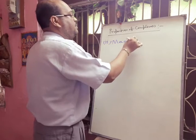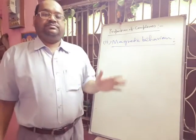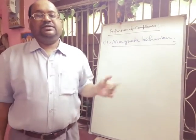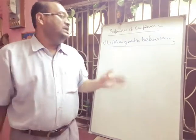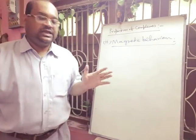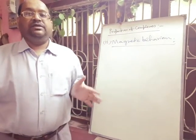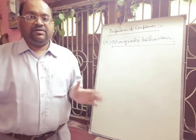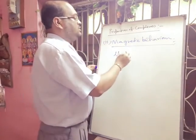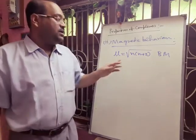Next we discuss magnetic behavior. If a complex compound contains unpaired electrons, it is called a paramagnetic complex. If all electrons are paired, it is called a diamagnetic complex. The magnetic moment is determined by the equation: μ = √(n(n+2)) BM, where BM is Bohr magneton and n is the number of unpaired electrons.